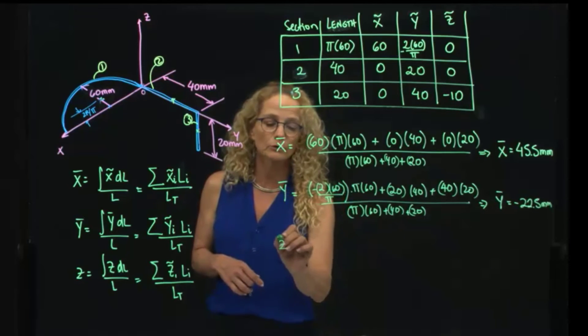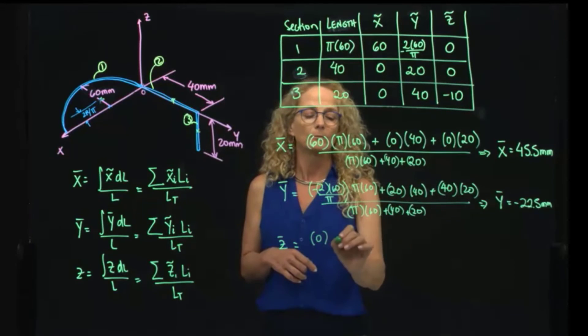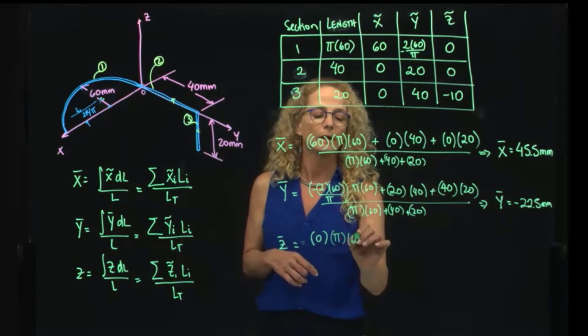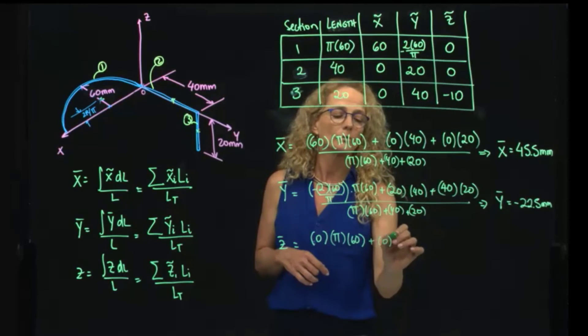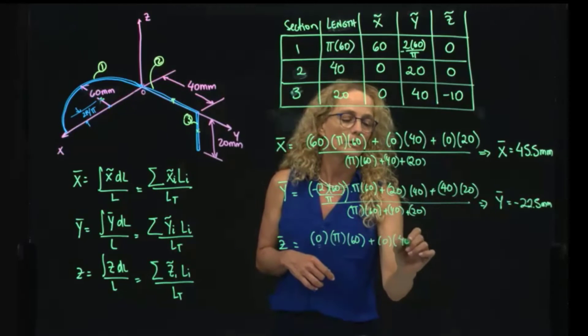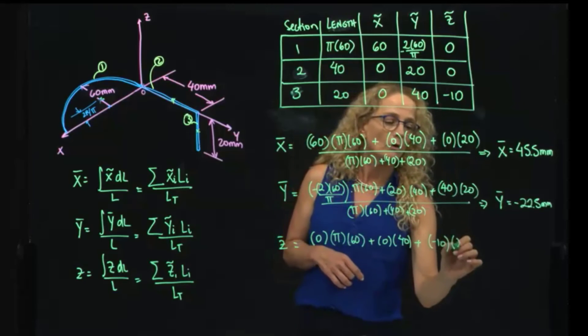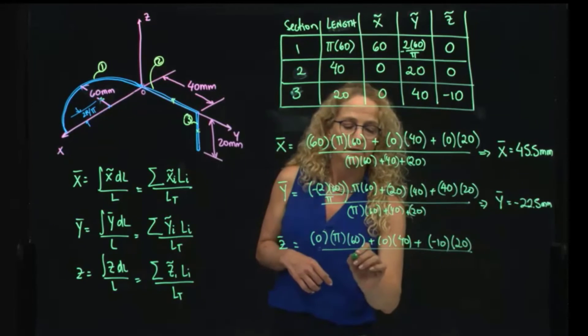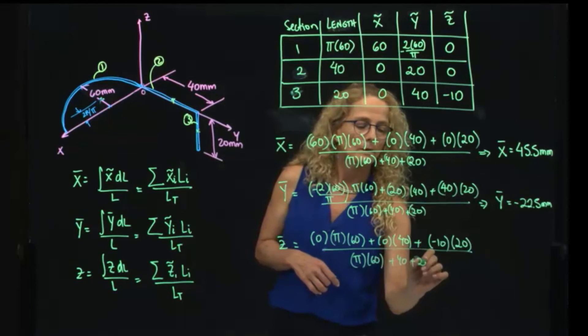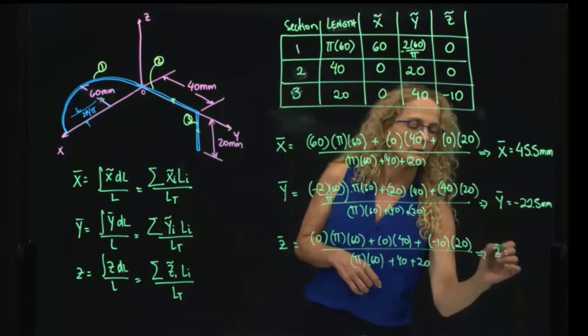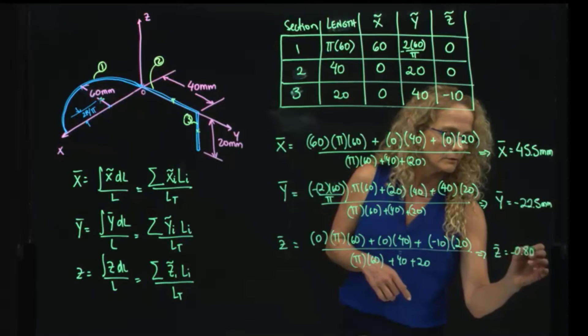And see, I do exactly the same, but now I do zero. I am being very specific to write everything down. Zero times this length, zero times this length. Obviously, zero times any number will be zero, but I just want to make sure that we understand what we are doing. So right here, over the total length. And that gives me the Z coordinate. And the Z coordinate is negative 0.805. I could actually, since I'm using only one decimal, I can leave it as 0.8 millimeters.